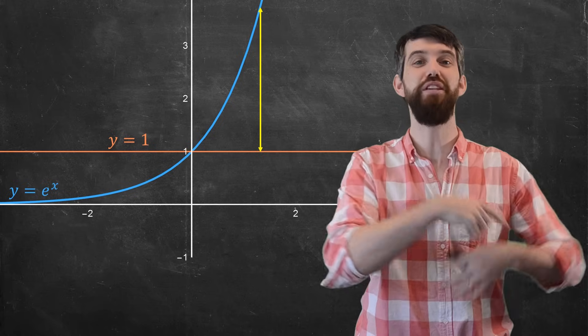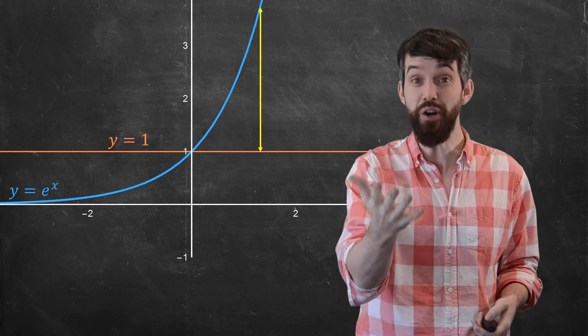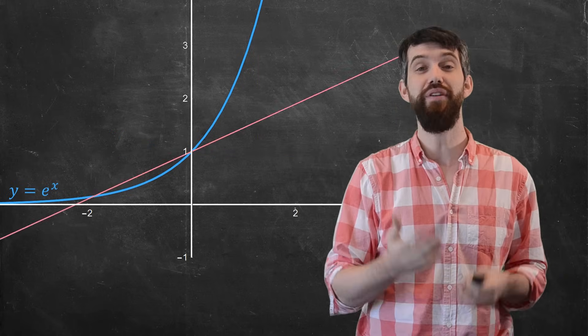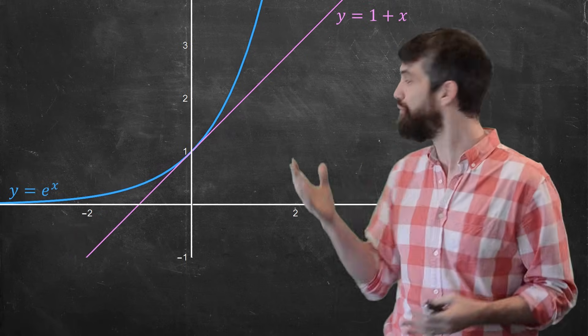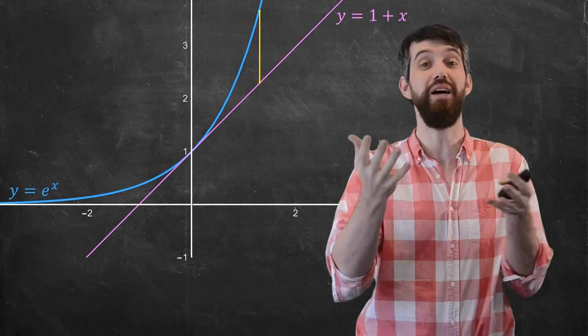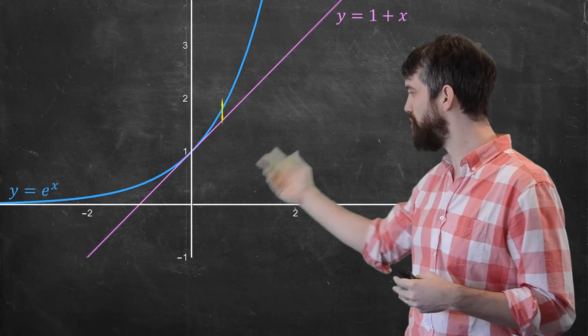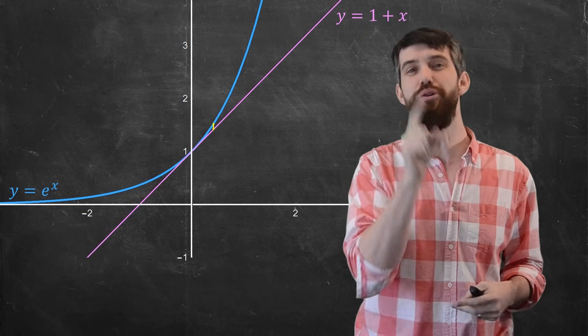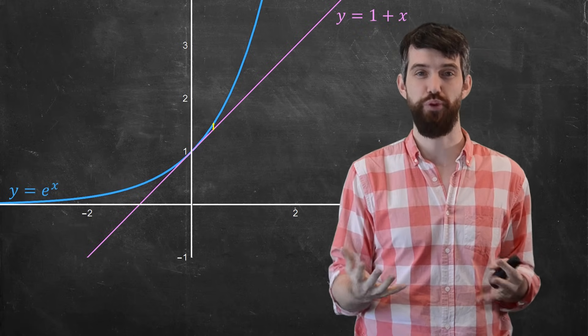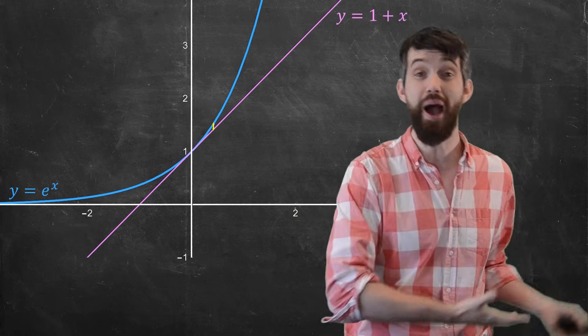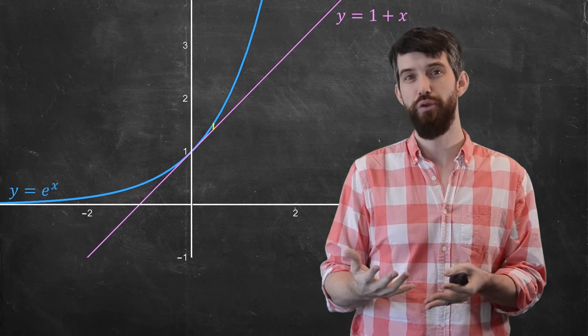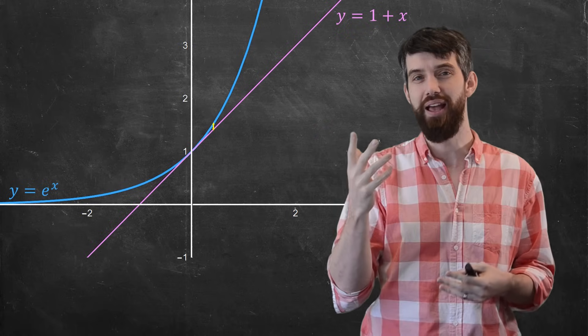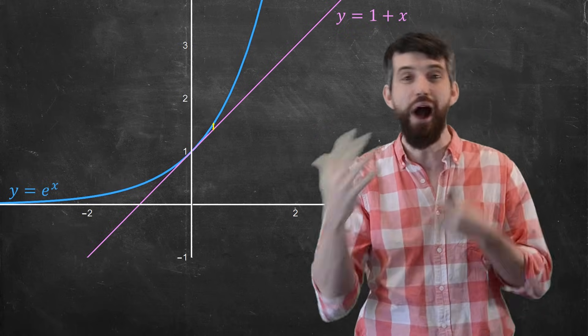But in calculus, we developed a better way to do this. We had the idea of a linear approximation. So instead of a constant function, a constant line, what we're going to do instead is have a tangent line. Now for this tangent line, our approximations are actually quite a bit better. And the closer that you go to wherever you've put the tangent line, in this case, it's the tangent line at 0, the better your approximation gets. So this tangent line is pretty good. But can we do better than just a linear approximation?